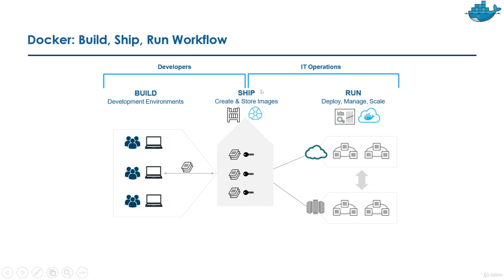That will then be used as a CI pipeline — run as a container — and then IT operations work starts: they deploy, manage, and scale. Whatever the development team has shipped, IT operations will deploy it on-premises in a data center or in the cloud.